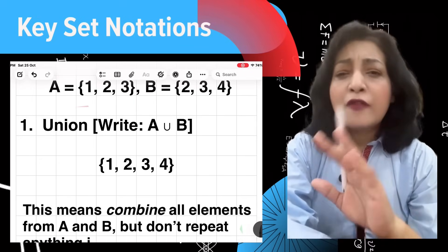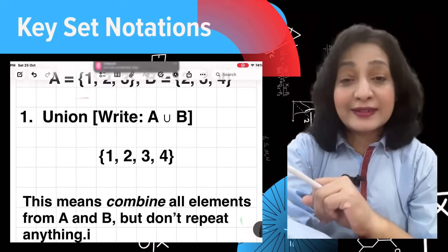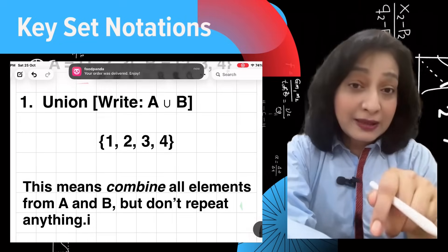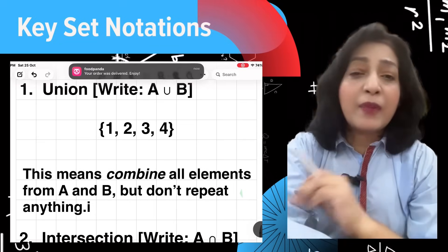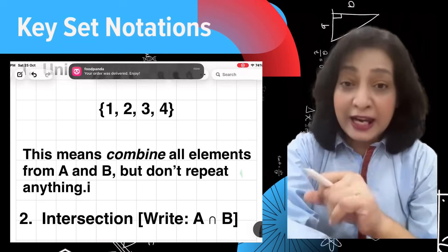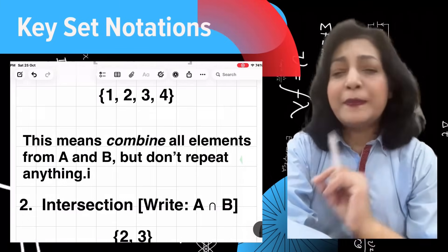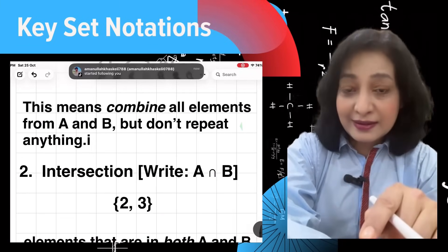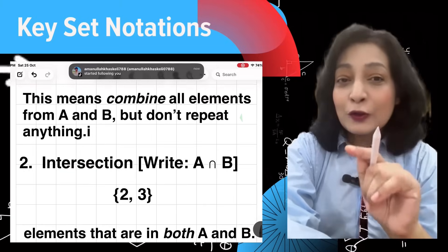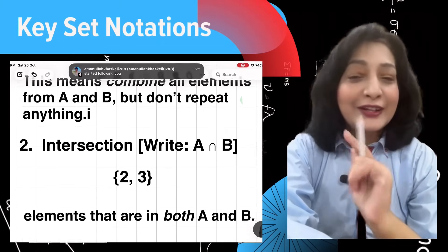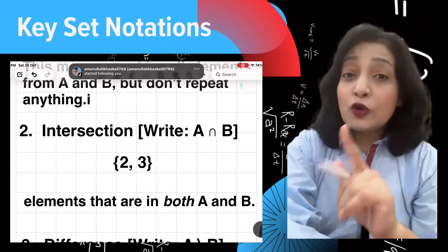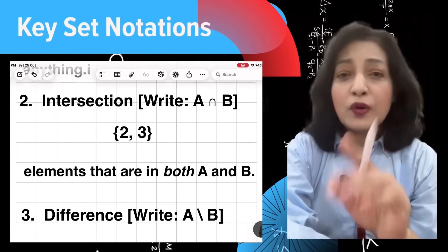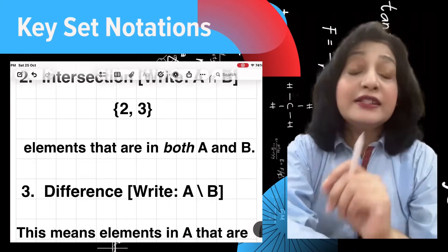Here are four important operations. First, A union B: this means combine all elements from A and B, but don't repeat anything. So A union B is {1, 2, 3, 4}. Very good! 2 and 3, which are in both sets, are only written once.